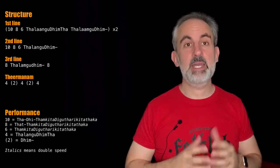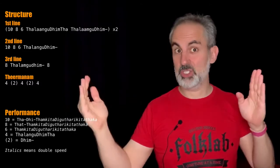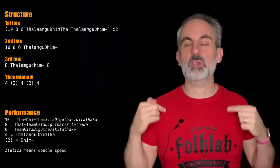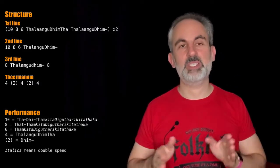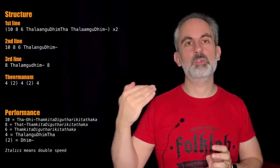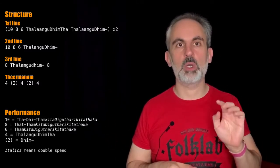The second line is similar, that means ten, eight, six, and Talangudim, so it's a shorter phrase. And then we don't repeat this. Then we go straight on to the third phrase, which is eight, Talangudim, eight, and then we go to the terminum, which has a shape of four, two gap, four, two gap, four.